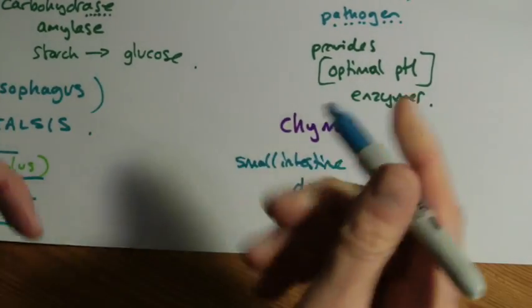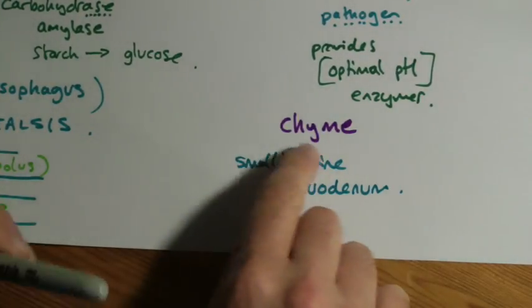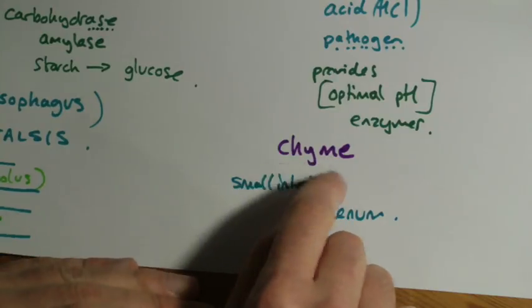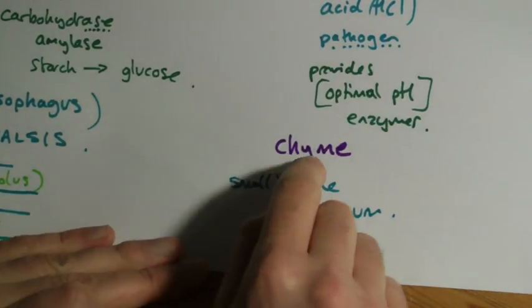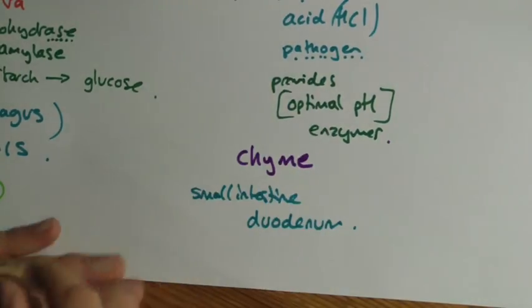So as the food, this kind of mushy soup that's coming out of your stomach is partially digested. In fact, the proteins, a lot of the protein is digested first in your stomach.